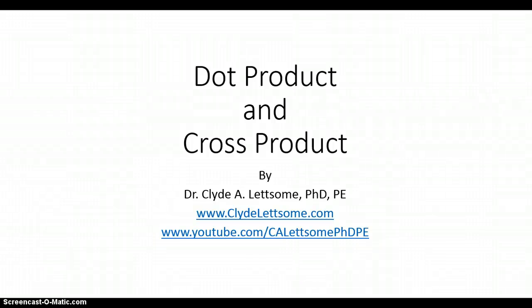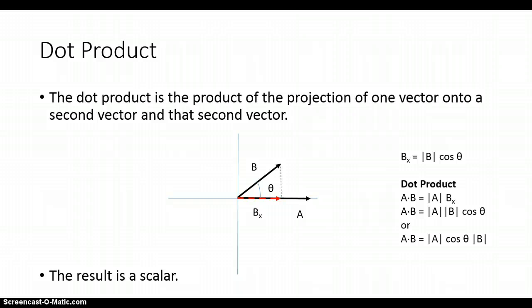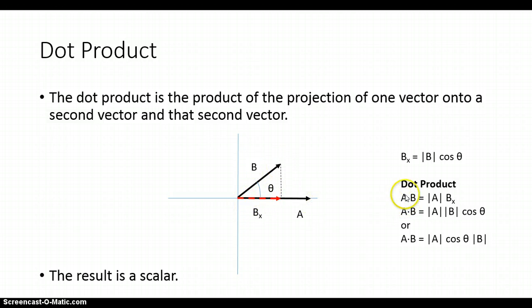In this video, we are exploring the dot product and cross product. Let's start with the dot product. The dot product is a product of the projection of one vector onto a second vector and that second vector. Let's take a look at what that means from a graphical point of view. Let's say we're given two vectors, a vector a and a vector b, and we're asked to find the dot product of a and b.